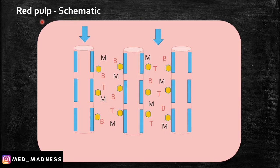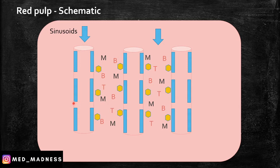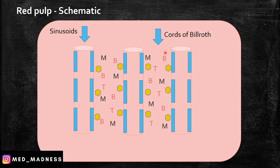Let's go to the red pulp. If you want to think about the red pulp, just two points. One is it consists of sinusoids, and the other is the cords. The splenic sinusoids are nothing but the capillaries of the spleen. They are very special because they have long endothelial cells and large gaps in between. In between the sinusoids, you can appreciate a lot of blood cells — macrophages, B and T cells, and also reticular cells, which are the yellow ones in my diagram. These cells are arranged in the form of cords, called the cords of Billroth or the splenic cords.